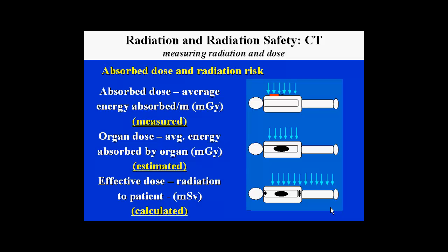Absorbed dose and radiation risk can be evaluated through several important parameters. We can measure the absorbed dose, which is the average energy absorbed per unit mass of the body. We can then estimate organ doses — the average energy absorbed by each organ — and then calculate the effective dose, which is the actual radiation exposure to the patient.